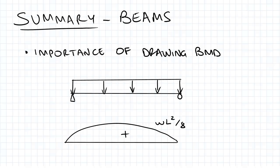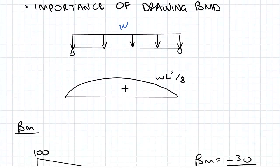For instance, I've drawn here a simply supported beam with a UDL W. We know this BMD shape would be WL squared on 8.